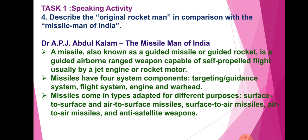Dr. A.P.J. Abdul Kalam, the missile man of India. A missile, also known as a guided missile or guided rocket, is an airborne ranged weapon capable of self-propelled flight, usually by a jet engine or rocket motor. A missile has four components: targeting, guidance system, flight system, engine, and warhead. Missiles come in types adapted for four purposes: surface-to-surface, air-to-surface, surface-to-air, air-to-air missiles, and anti-satellite weapons.